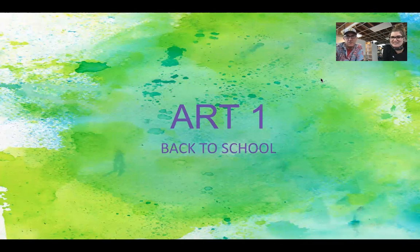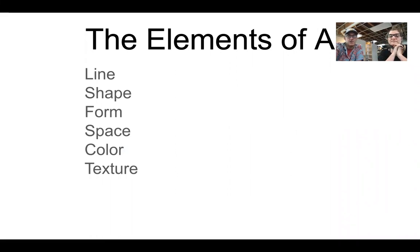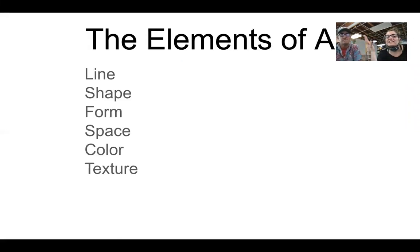Normally you would be in our classrooms and we'd be walking you through this, but today we're going to walk you through a virtual version of that. Our whole program is built on the elements of art: line, shape, form, space, color, and texture. Your kids can probably tell you that by now because we've already started putting these items in our sketchbook. A metaphor I like to use is — the elements are like the ingredients when you're making a cake, and all the different cakes you can make with those ingredients are the principles.